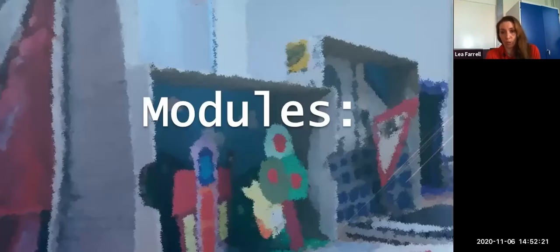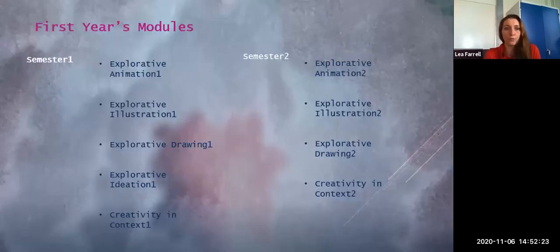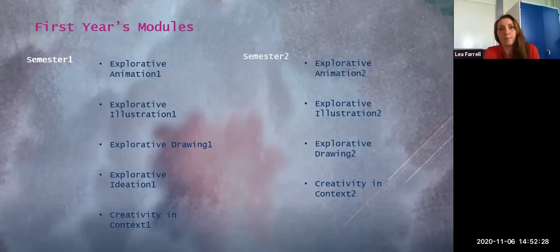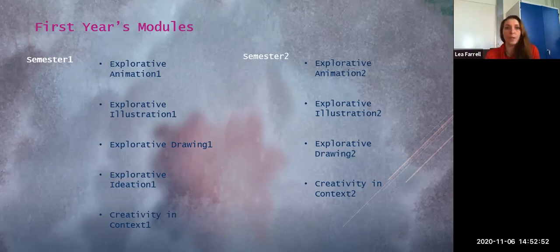The modules that you will learn. Over the four years, the students will go through practical modules, which are labs, and theory based lectures. The first year's modules are constructed to create a strong foundation in the student skill set. First year's theory modules are Explorative Ideation, Creativity in Context One and Two. Practical modules labs are Explorative Illustration One and Two, Explorative Animation One and Two, Explorative Drawing One and Two. One is semester one, two is semester two.